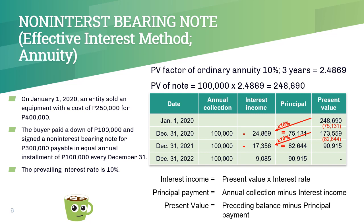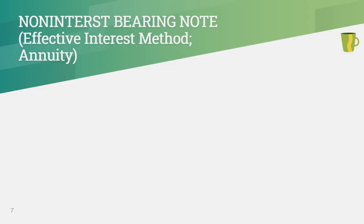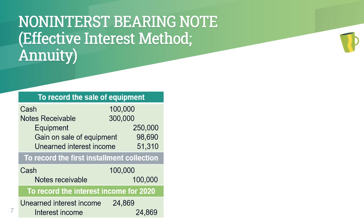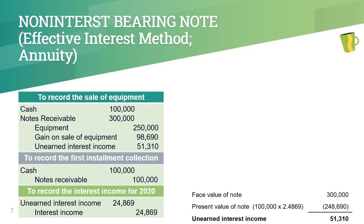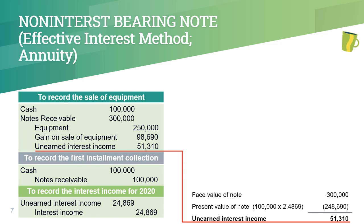However, because of rounding off, we are not likely to arrive at precisely 0 at the end of 3 years. So in the last year, the interest income serves as the balancing figure to force the present value to 0. The difference between the face value and the present value of the note amounting to 51,310 pesos is initially recorded as unearned interest income and recognized as interest income over the term of the note based on the amortization table. The amortization is debited to unearned interest income and credited to interest income.